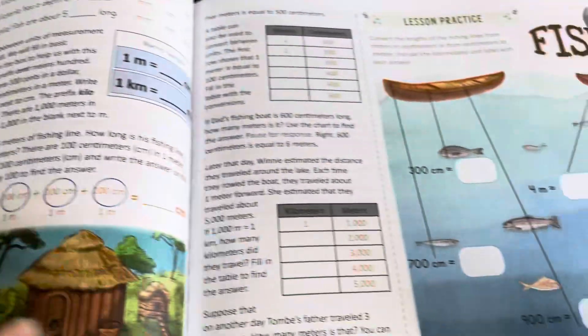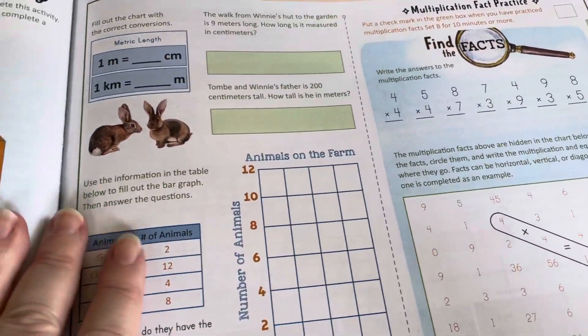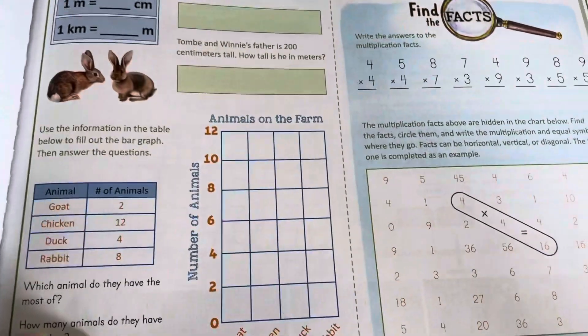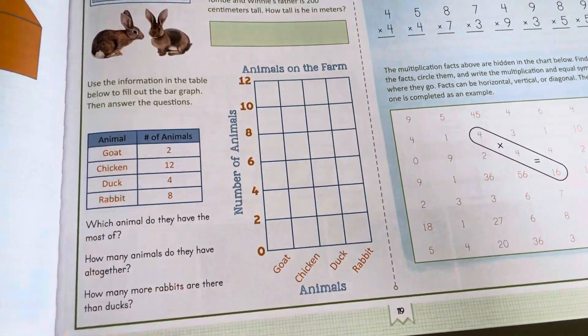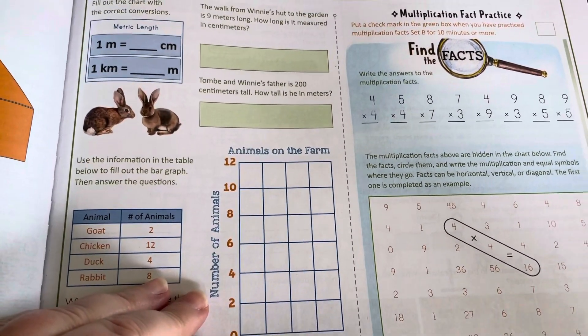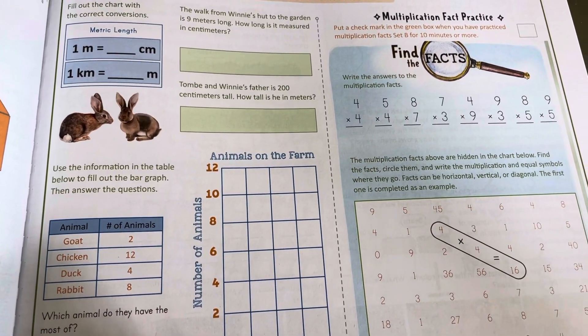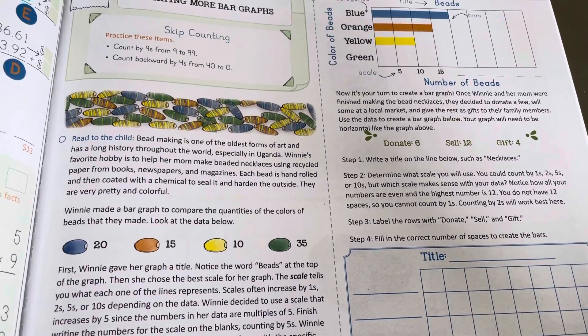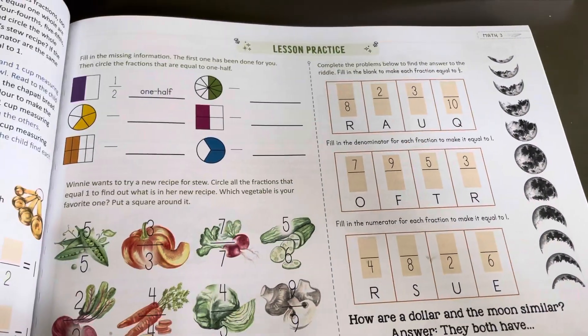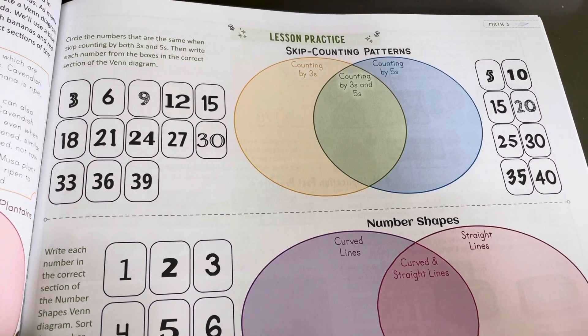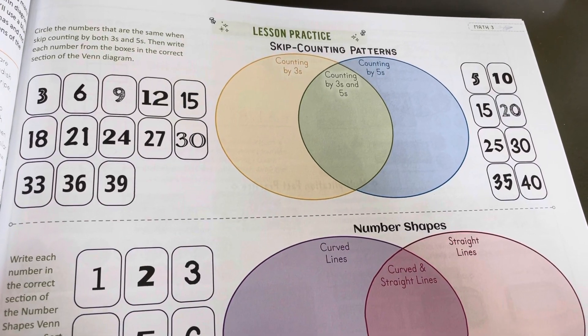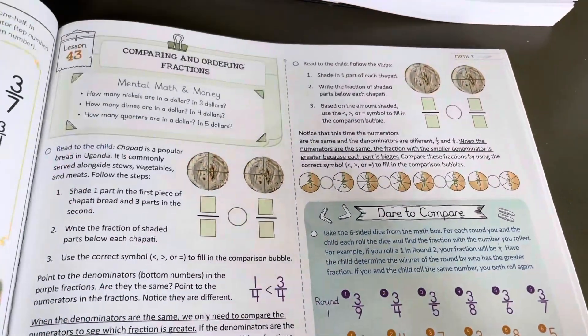Let me skip ahead. Metric length conversions. So we're going to be doing all kinds of things. Lines of symmetry. Those gave us trouble last year. There's multiplication fact practice throughout these lessons.